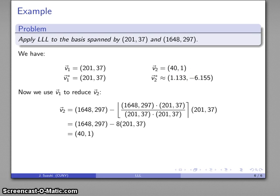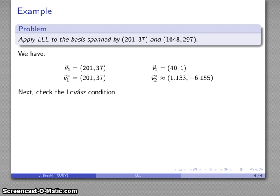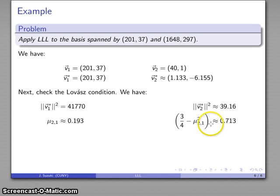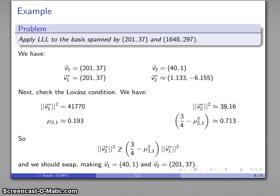We've computed our second basis vector. Now we check the Lovász condition to see if we like it or should switch. We calculate the magnitude of the Gram-Schmidt basis vector, then compute μ as the dot product of the new basis vector with the Gram-Schmidt basis over the magnitude squared of the Gram-Schmidt basis vector. We compute (3/4 - μ²) ≈ 0.713. Checking whether the magnitude squared is greater than or equal to (3/4 - μ²) times the Gram-Schmidt basis magnitude squared, it's fairly easy to see that is not the case. So we need to swap our V1 and V2 vectors.